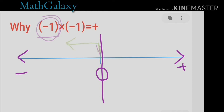Now we multiply by the second minus 1. Since I am currently facing left, left is my positive direction. But the second minus says I have to go backwards — so my direction is reversed. How far do I go? I go only one step, because the magnitude is 1. So I end up one unit to the right of zero, which is positive 1.